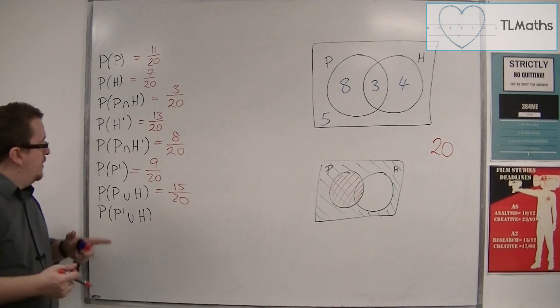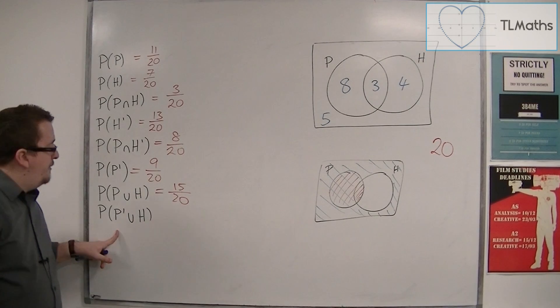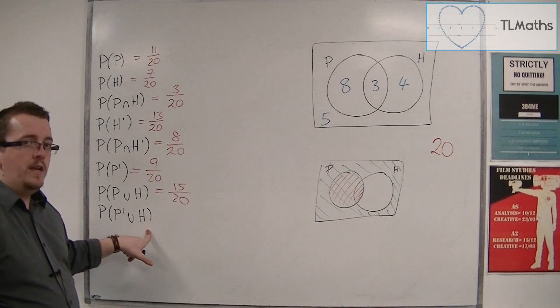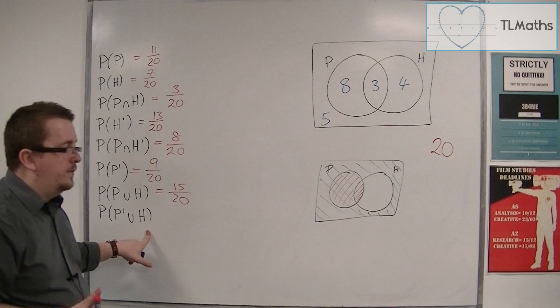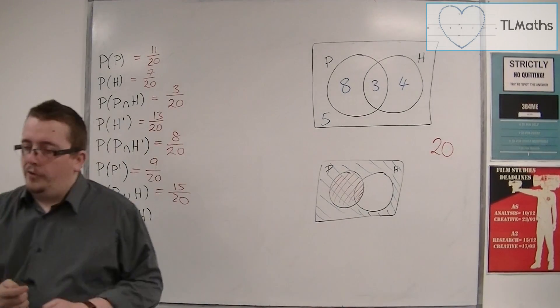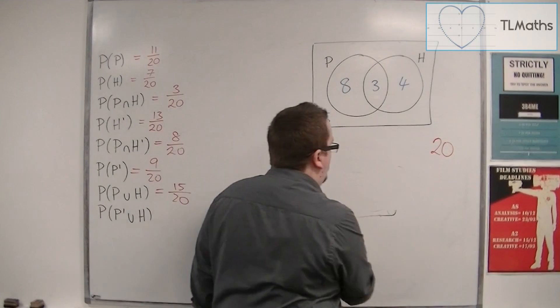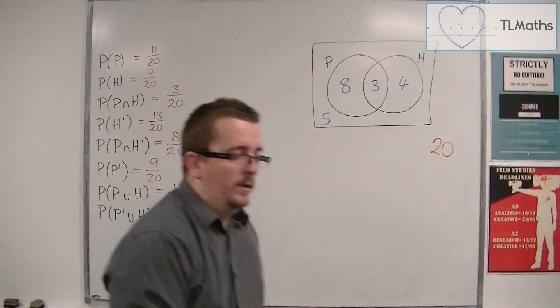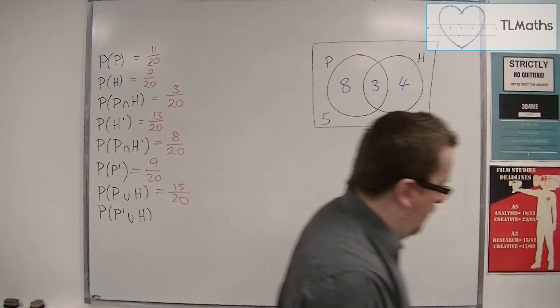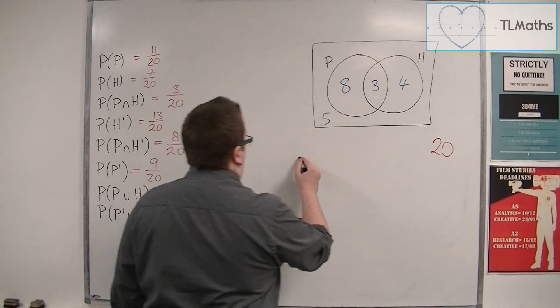Then finally, you've got the probability of not physics or history or both. Now that's a little odd to think about. So sometimes with these, it's going to be a case of let's draw a Venn diagram to help us. Well, another Venn diagram.